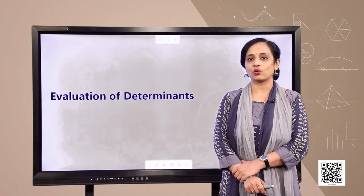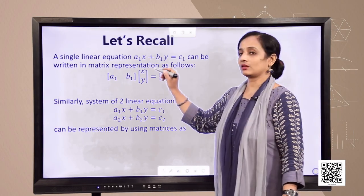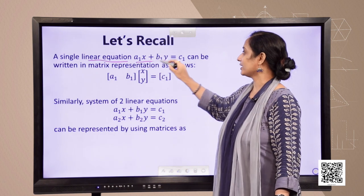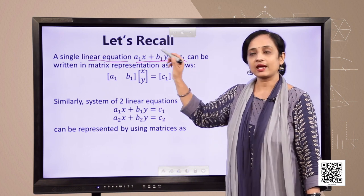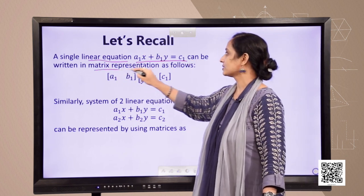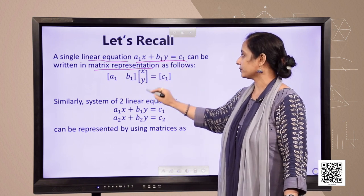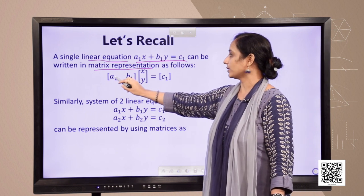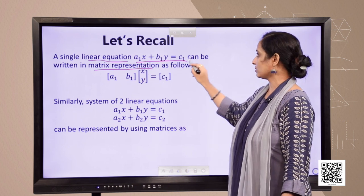Let us learn how to write equations in the form of matrices. In class 10th you studied about linear equations represented as a1·x + b1·y = c1, where a1, b1, and c1 are constants and x and y are variables. This equation can be written in matrix form as [a1, b1] as a row matrix, [x, y] as a column matrix, and c1 as a matrix of order 1. When you multiply, you get the original equation back.